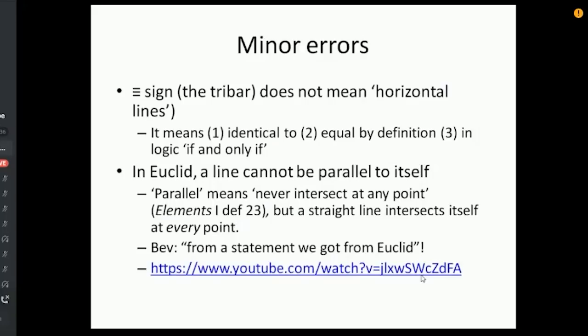The second point, which he's got completely wrong, is in Euclid a line cannot be parallel to itself, because what does parallel mean for Euclid? It means two lines that never intersect at any point ever, but obviously a straight line intersects itself at every point, so a straight line can never be parallel to itself. For Euclid, you could obviously redefine parallel if you want, but looking at Bev's presentation last night, he was clearly saying he got this from Euclid, which he clearly didn't.